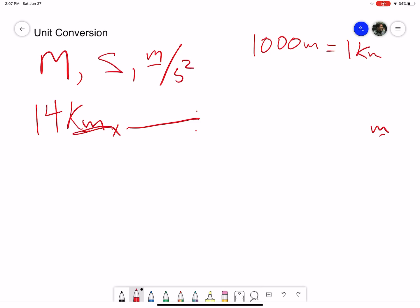If I have kilometers over here, that's on top, so I need to put kilometers down below for them to cancel out. Next, I'm going to put what I'm replacing the kilometers with - in this case, meters. I want to put my meters there because that's where I'm replacing the kilometers.